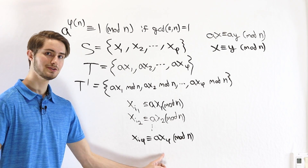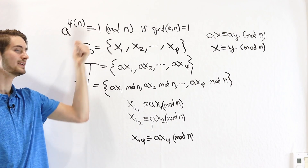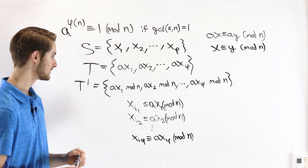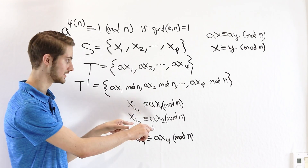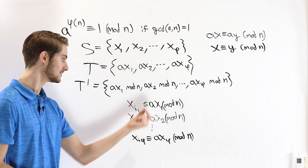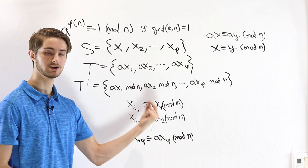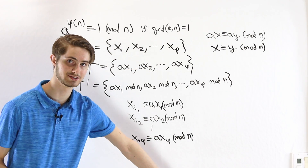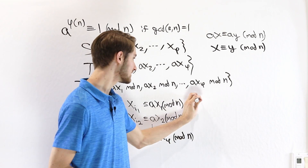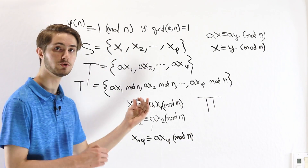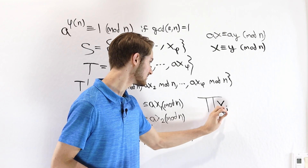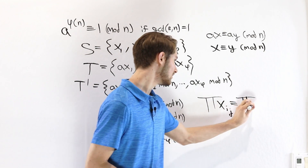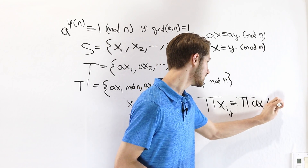See if you can guess how we get from these congruences to the final statement: a to the φ(n) is congruent to 1 mod n. The way we do that is using the multiplication rule for modular arithmetic. If we have two numbers congruent to each other mod n, we can multiply the numbers on the left and the numbers on the right, and those two products will be congruent mod n.